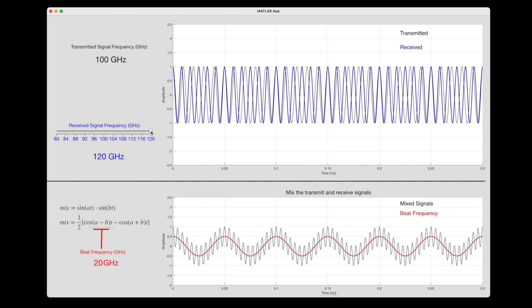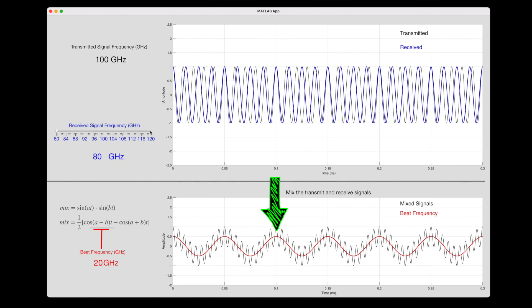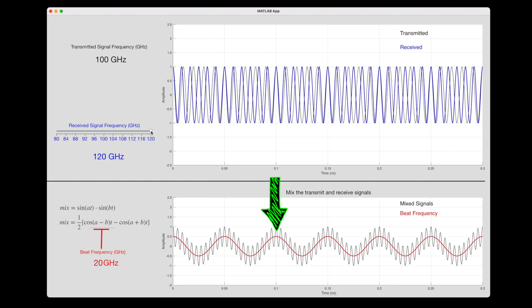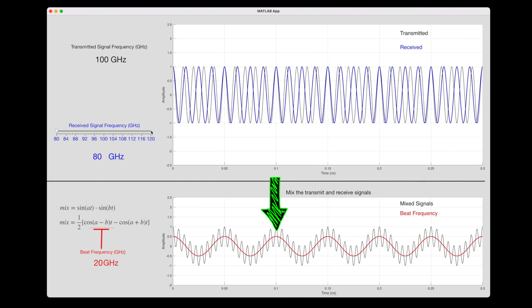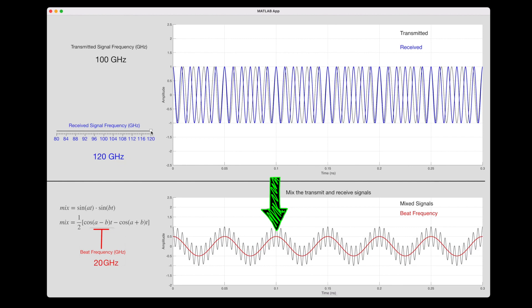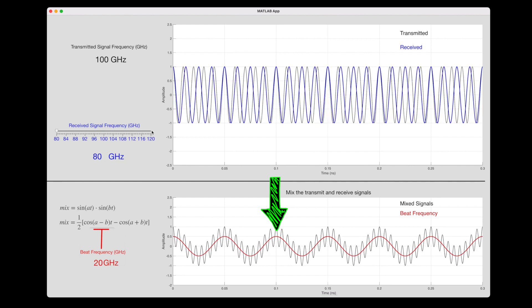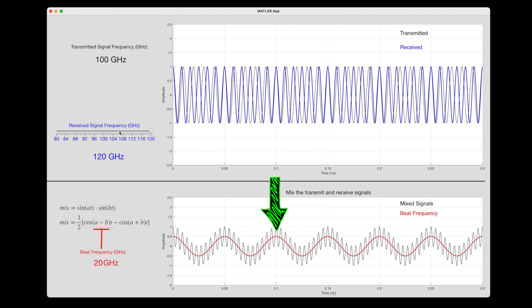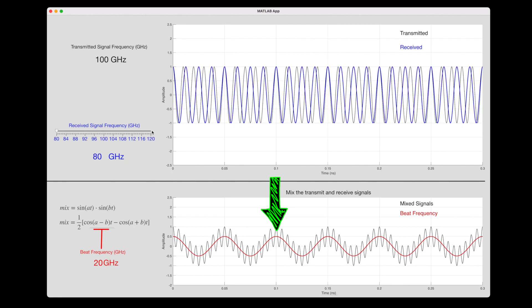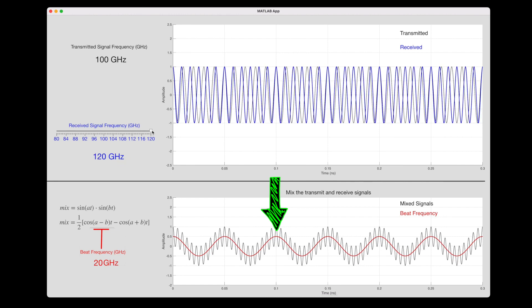However, there is a small problem with how I've set this up. If I toggle back and forth between 120 gigahertz and 80 gigahertz, you'll notice that the beat frequency doesn't change. The difference is 20 gigahertz regardless. This is a radar system with just a real stage, a single transmit signal. With this setup, we can determine the speed of the object, but not the direction. We can't tell if it's coming towards the radar or moving away.